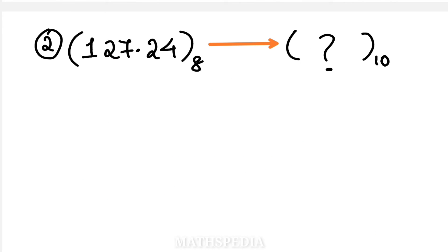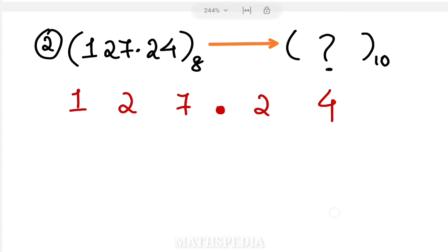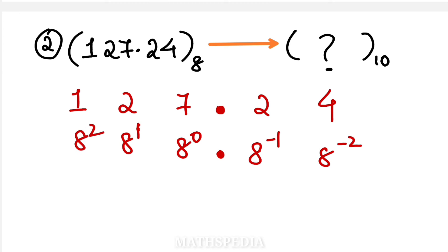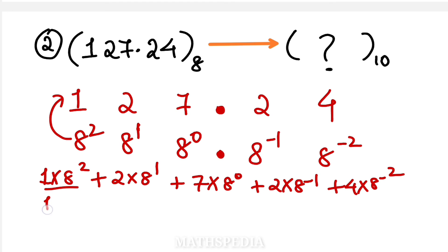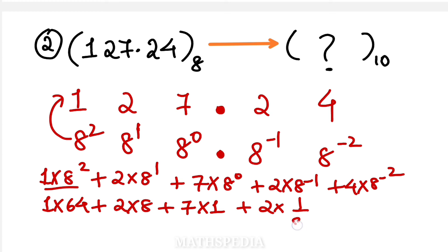Now a decimal point example: convert 127.24 (octal) to decimal. On the right of the point: 8 power minus 1, 8 power minus 2. On the left: 8 power 0, 8 power 1, 8 power 2. So: 1 × 8 power 2, plus 2 × 8 power 1, plus 7 × 8 power 0, plus 2 × 8 power minus 1, plus 4 × 8 power minus 2. That gives: 1 × 64, plus 2 × 8, plus 7 × 1, plus 2 × (1/8), plus 4 × (1/64).